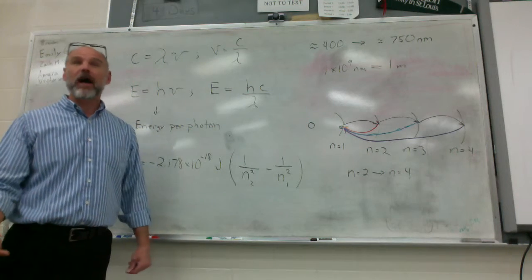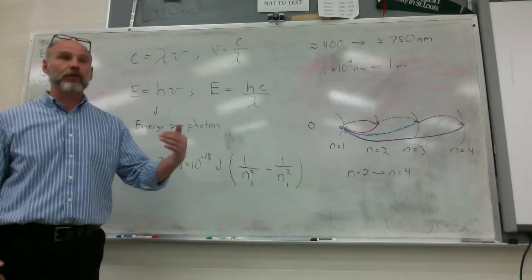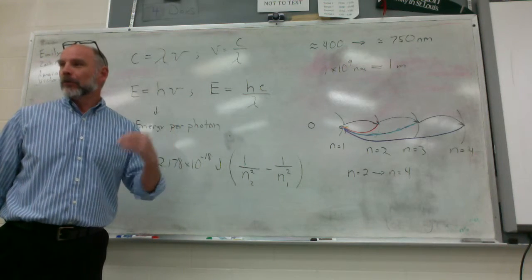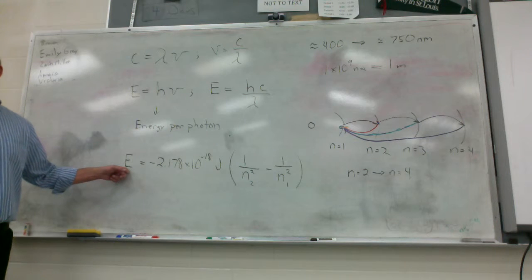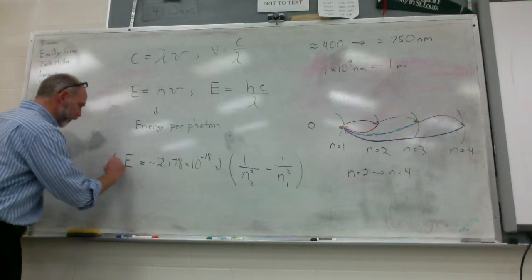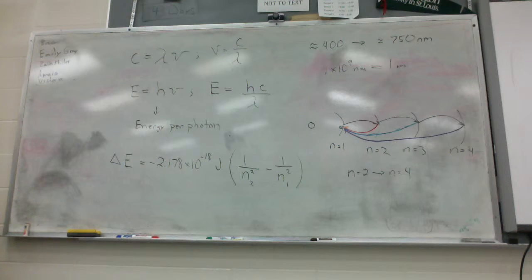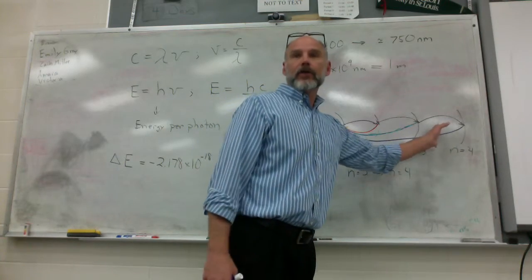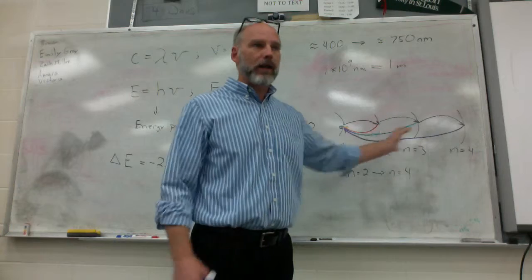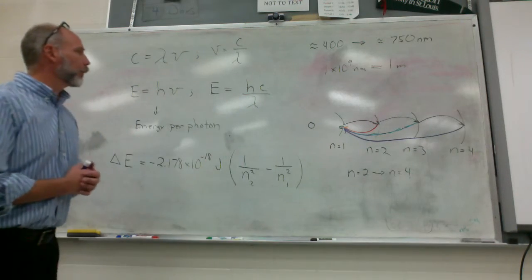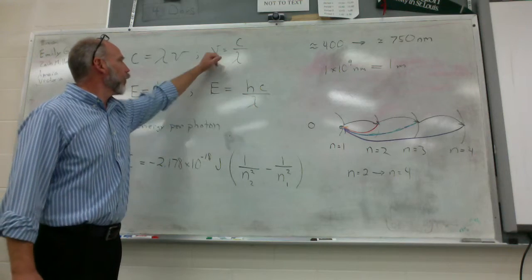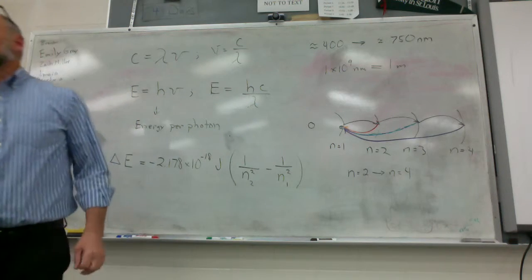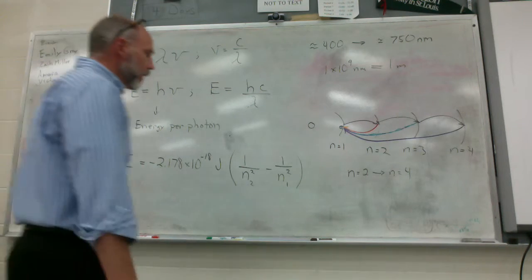So, if we're talking initial and final, we're talking electrons moving from one energy level to another. That means we're going to have a change in energy. So, we need to add the delta sign over here. So, now what we're looking at is the change in energy that's associated with an electron moving from one energy level to a different energy level. We can go adding energy. We can go decreasing energy. We can do anything.